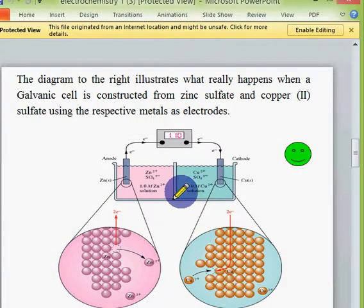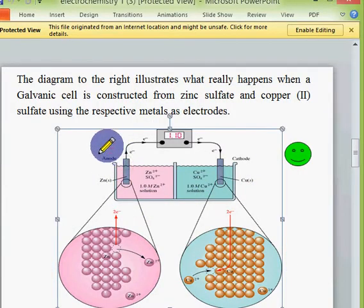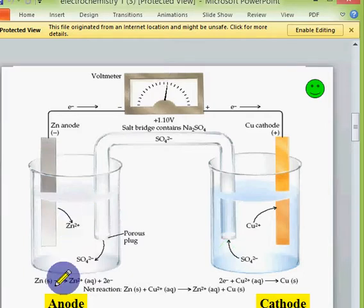Then after construction, what they observed is size of zinc rod decreases and concentration of Zn²⁺ increases. At the same time, size of copper increases, Cu²⁺ solution decreases. How they explained is, here at zinc, zinc is converted into Zn²⁺ by loss of two electrons. So this is called oxidation. Due to this, the electrode gets negative charge, the solution gets positive charge. So this electrode acts as anode.